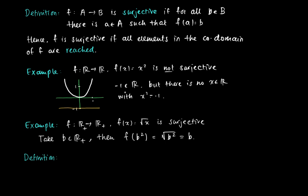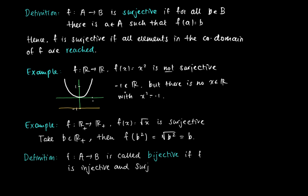A very special property arises when a function is both injective and surjective: per image point there is a unique original, and all members in the codomain B are reached, meaning the range of f equals B. In this case the function is called bijective — a function is bijective if and only if it is both injective and surjective.